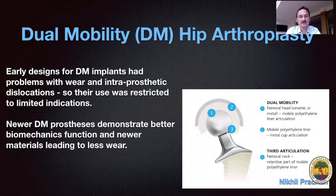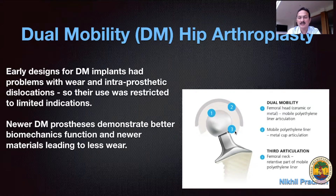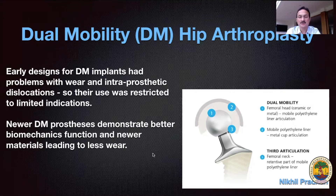Earlier designs of DM implants had problems with wear and intra-prosthetic dislocations, hence their use was quite limited. Looking at the articulations: articulation one is between the small head and the poly, two is between the large poly and the polished metal shell, and the third is an impingement articulation between the neck and the poly, which causes the large poly to move within the large shell. This third articulation used to lead to third body wear and debris. Newer prosthetic designs show better biomechanics, and the use of highly cross-linked poly with a highly polished metallic surface leads to less wear.